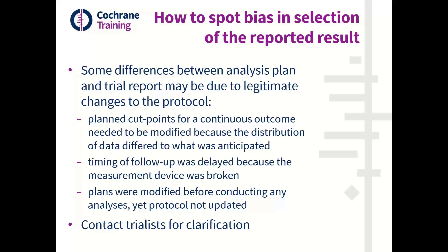It's also possible that the timing of an assessment might have been delayed because the measurement device was broken, or some other disruption happened, such as a global pandemic. Sometimes plans may need to be modified, yet the authors just didn't update the trial registry entry, protocol, or statistical analysis plan. So if you find any evidence of these discrepancies, it's helpful to contact the trialist for clarification and see if they can give you the reason why such changes were made, and then you can judge how reasonable you think they were.